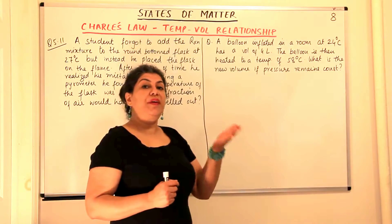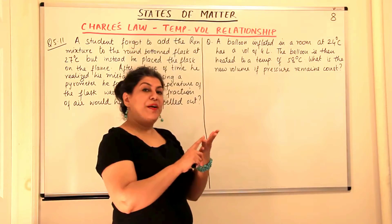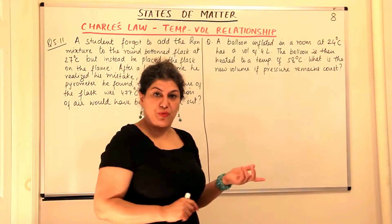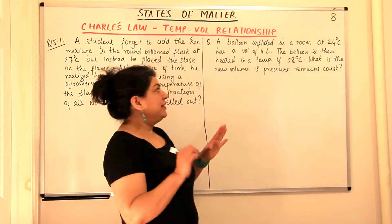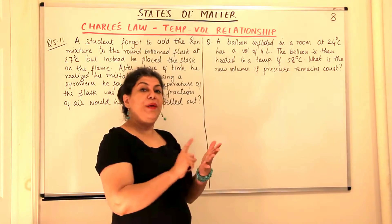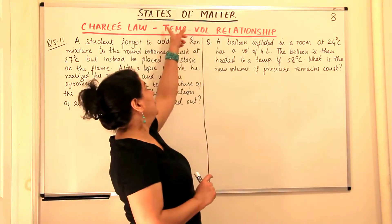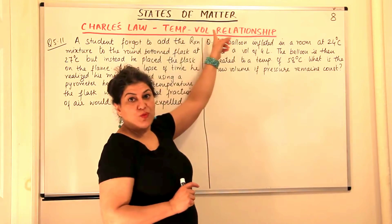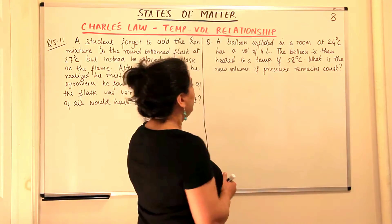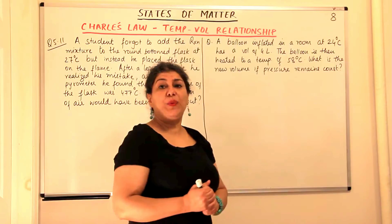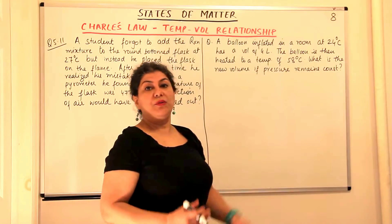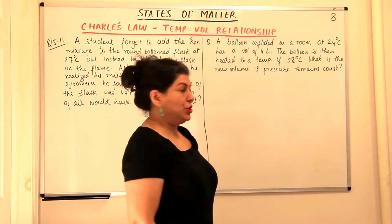Why? Because what are the requirements for Charles Law? The pressure and number of moles should be fixed, and the two things that are varying should be the volume and temperature. That's why it is also known as the temperature-volume relationship. And the equation we'd be using is: V1 upon T1 is equal to V2 upon T2.